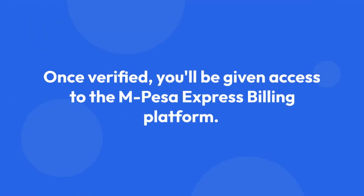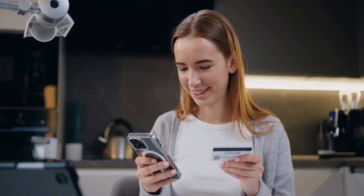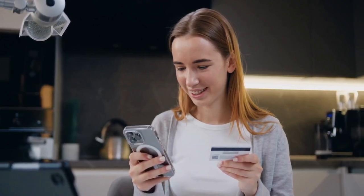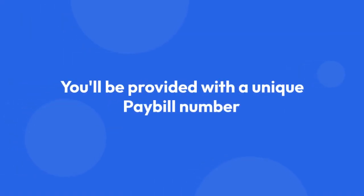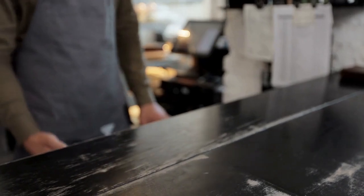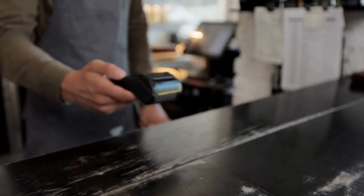4. Once verified, you'll be given access to the M-Pesa Express Billing Platform. This allows you to create your payment requests, configure your billing settings like payment deadlines and descriptions, and receive payments from your customers. 5. You'll be provided with a unique pay bill number, which your customers will use to make payments to your business.